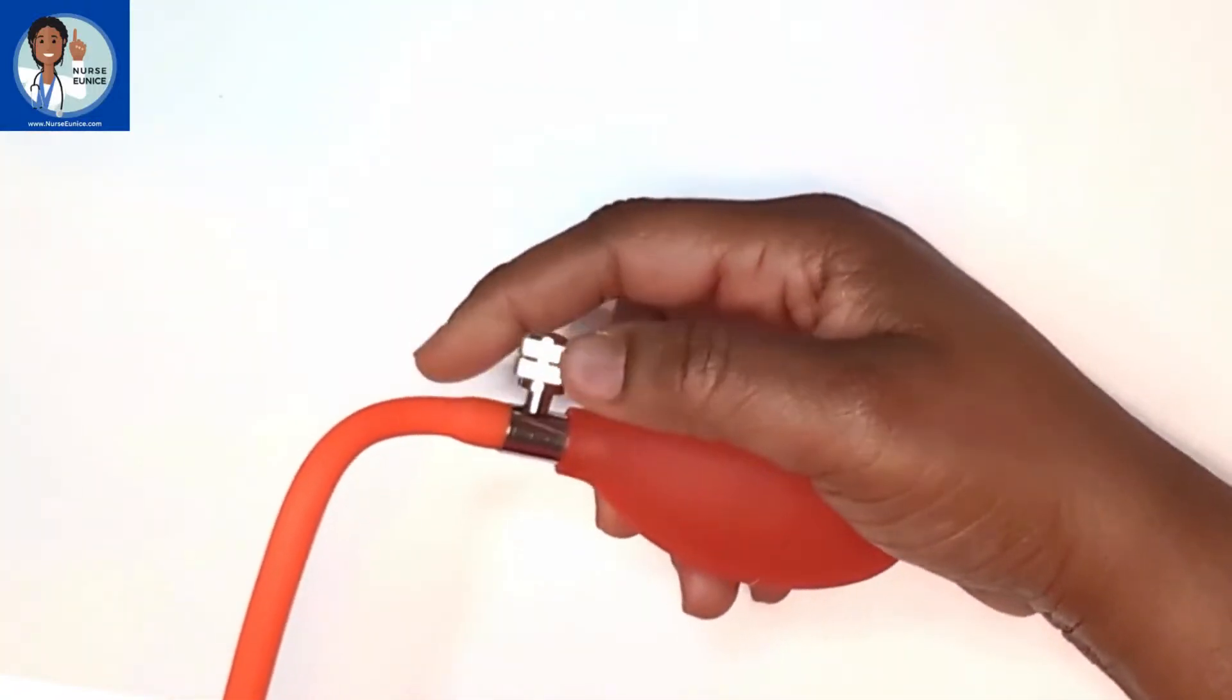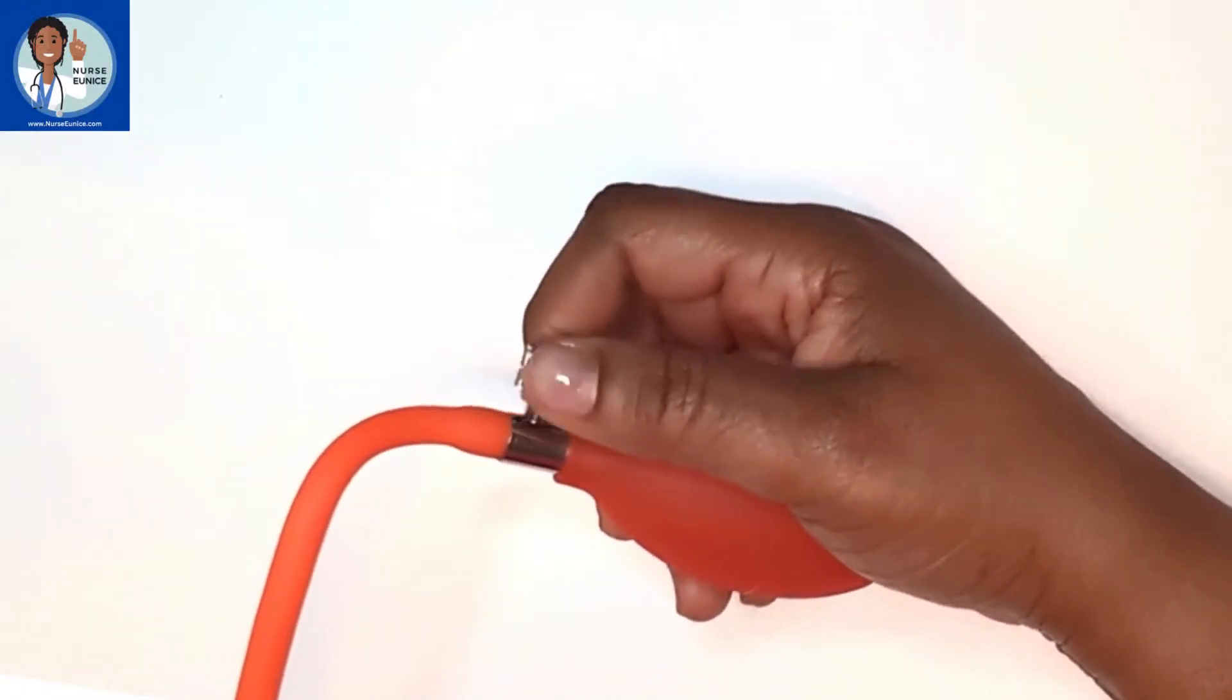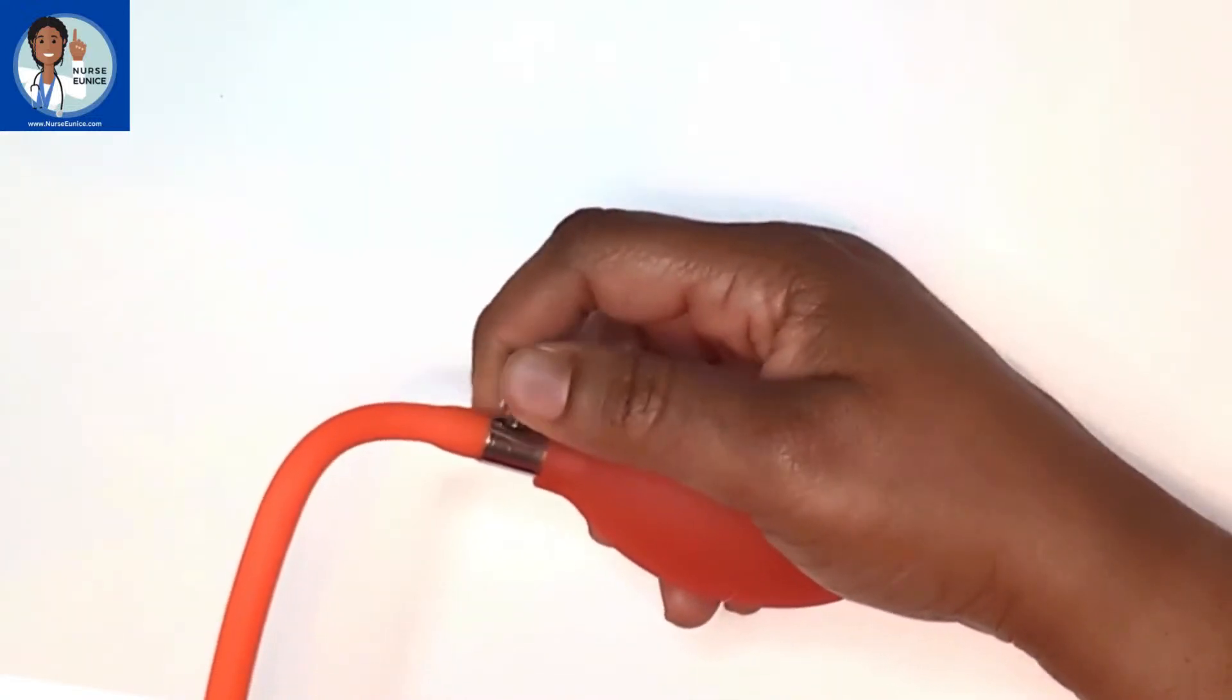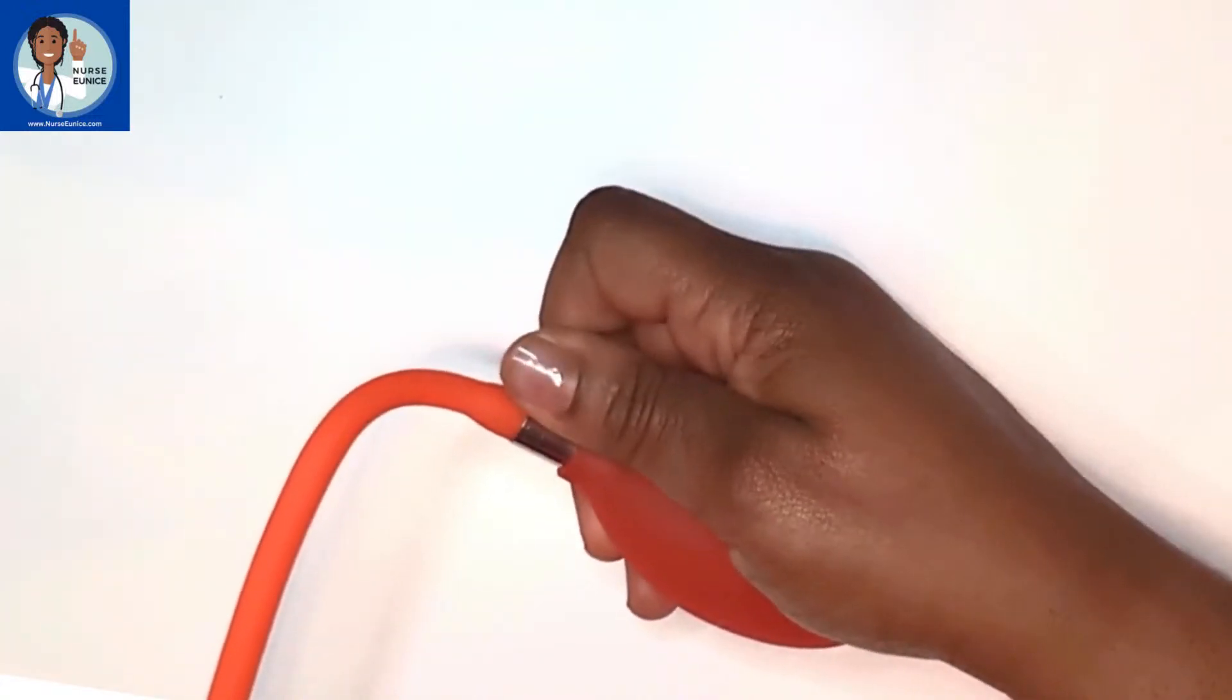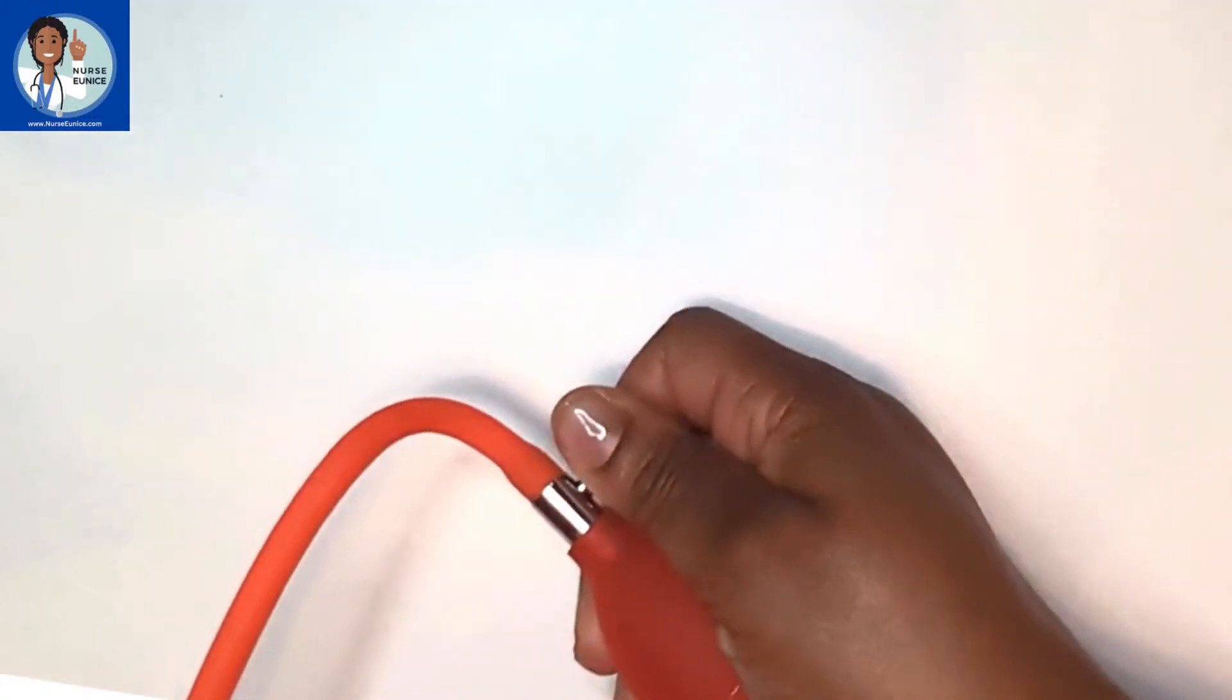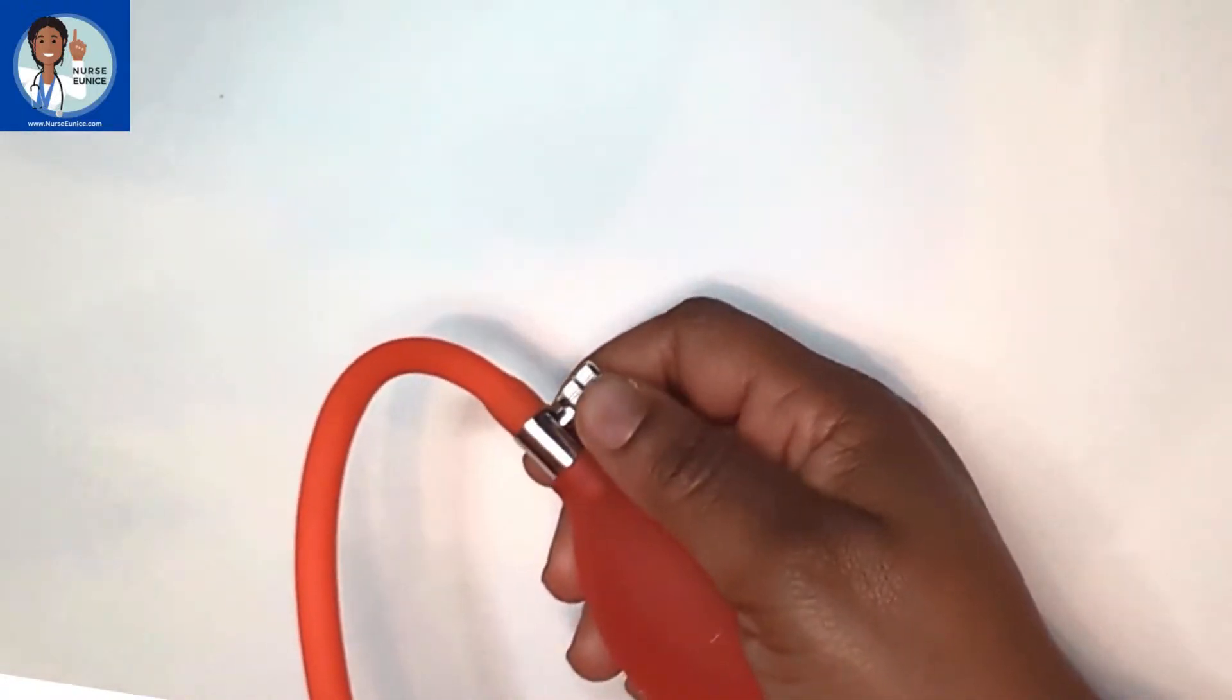We're going to tighten the air valve by turning it away from us. But don't tighten it so tightly to where you can't open it with two fingers. You'll know when it's closed because you won't be able to turn it any further. Don't make it so tight until you can't open it up with your two fingers. I like to keep two fingers on the air valve at all times. We have it closed.